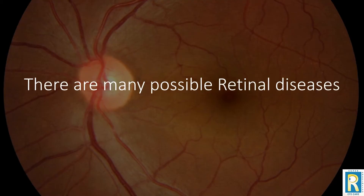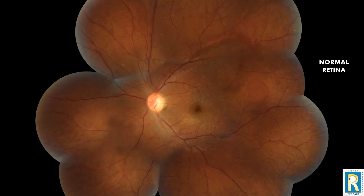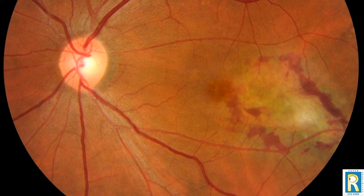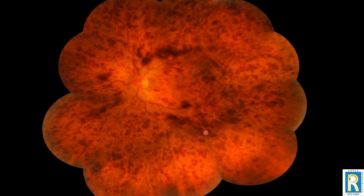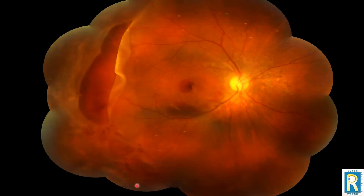There are many possible retinal problems. This is how your retina appears normally. There may be bleeding under the retina due to old age, or bleeding in front of the retina due to various conditions, most commonly diabetes. There may be bleeding in the retina — something we call a stroke of the eye — due to high blood pressure or diabetes. Or the retina may get torn and detach.